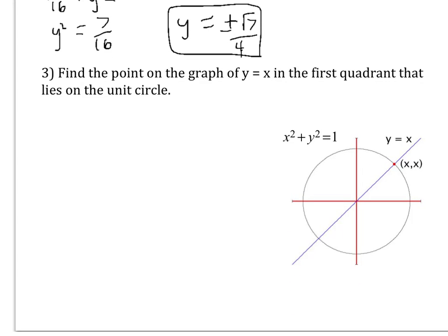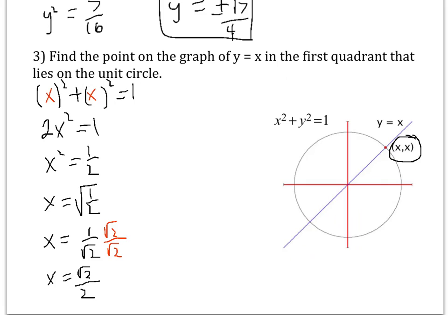This next problem is really important. We're trying to find the point on the graph of y = x that also lies on the unit circle. Notice the x and y coordinates are equal. When you substitute, you get 2x² = 1. Solving for x — and since we're in the first quadrant, x is positive — you get x = √2/2 after rationalizing. The full answer is the point (√2/2, √2/2).